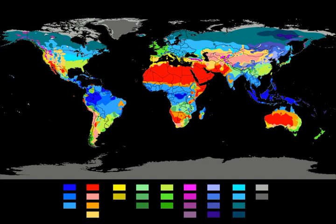Examples of dry winter highland climate: Mexico City, Mexico; Addis Ababa, Ethiopia; Harare, Zimbabwe; Antananarivo, Madagascar; Johannesburg, South Africa; Cusco, Peru; La Paz, Bolivia; Salta, Argentina.